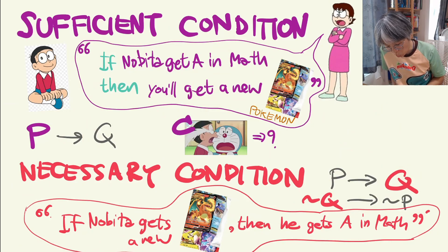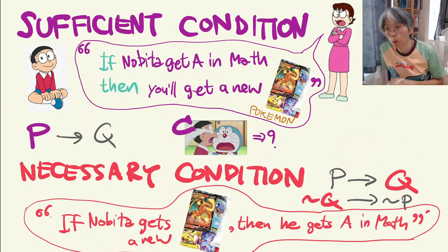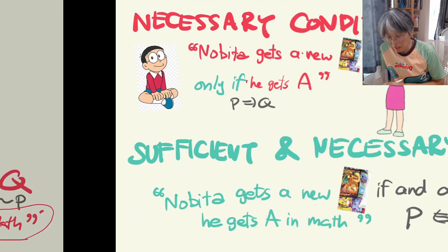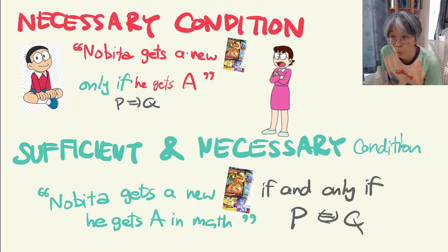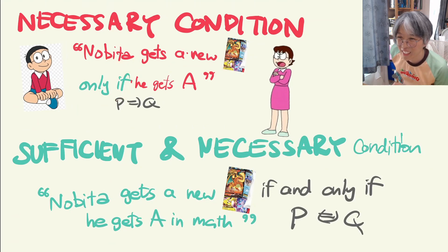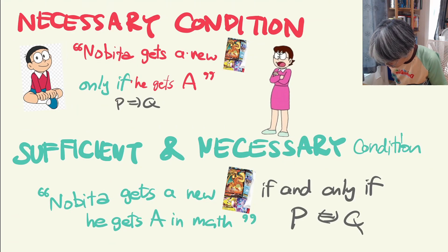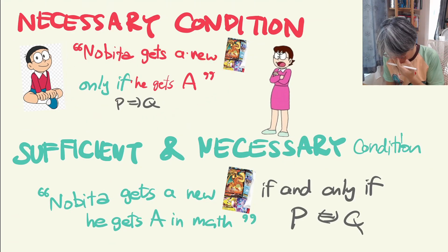In this case we say that Q is a necessary condition for P to hold. When you read a mathematical textbook, another common way to express a necessary condition is something like: Nobita gets a new card only if he gets an A in math. This is another form you'll see in mathematical textbooks.